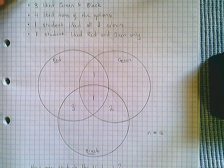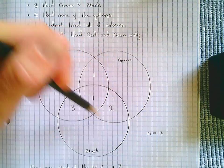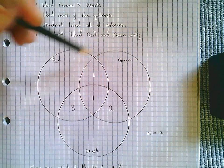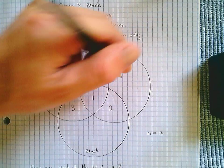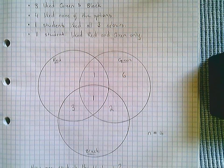I'm told that ten students liked green. Now here's my green circle. Everything in it must add to ten. So two plus two is four, leaving me six to add to the ten.